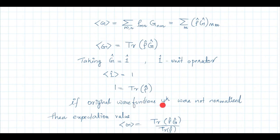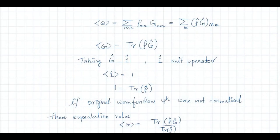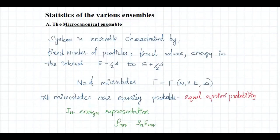If the original wave functions ψ_k were not normalized, the expectation value is given by Tr(ρ̂Ĝ) divided by Tr(ρ̂). We will now consider the three different types of ensembles and their statistics.